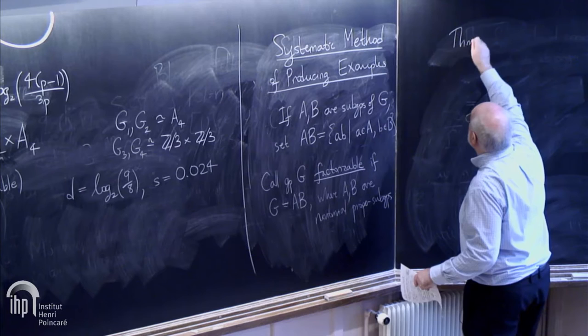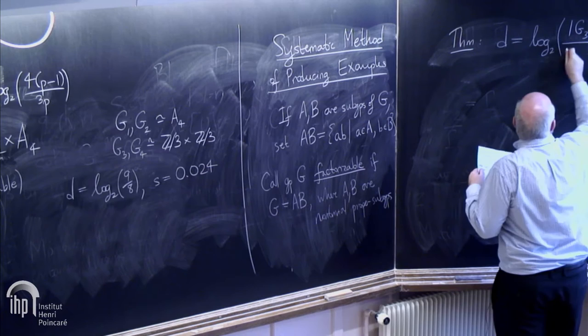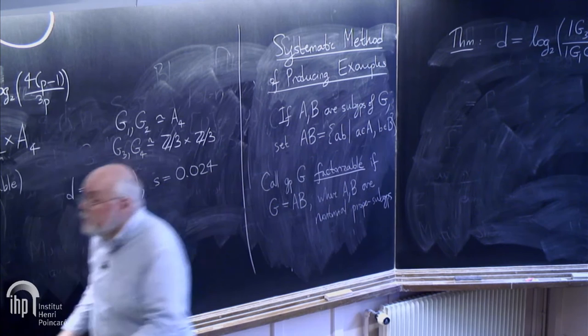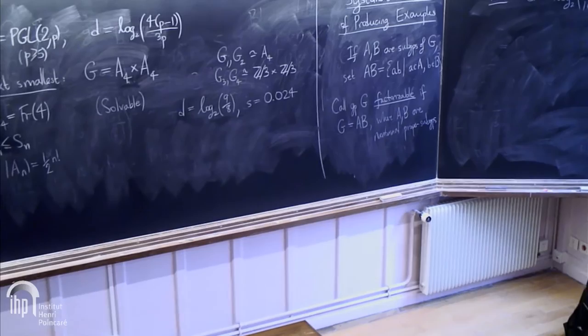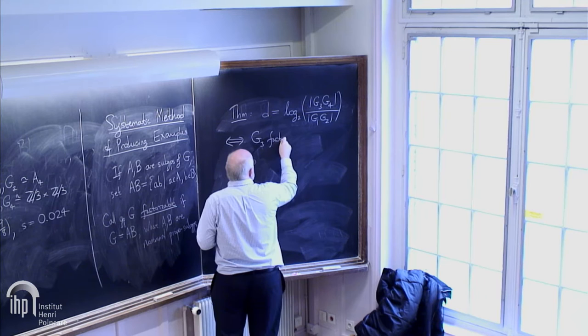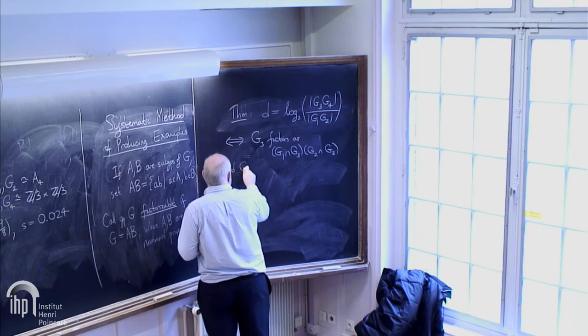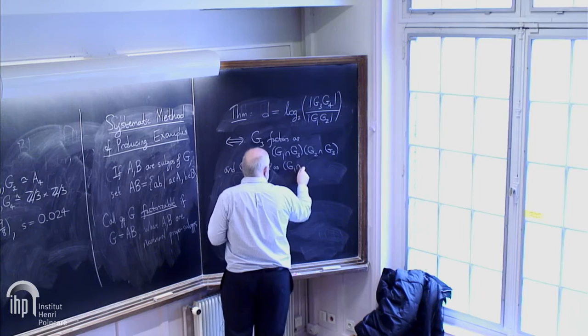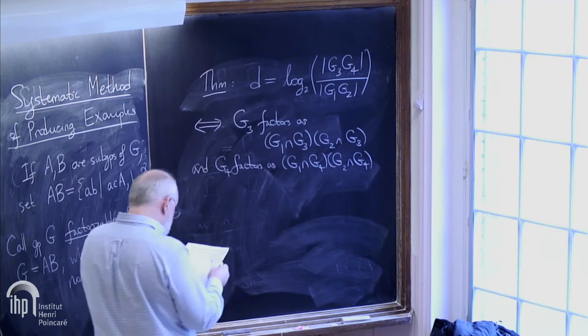The theorem is that D simplifies to a much simpler expression. If you wrote this out in terms of order of G over order of G123, it gets pretty complicated with 10 terms. It actually simplifies: this holds if and only if G3 factors as G1 intersection G3 times G2 intersection G3, and G4 factors as G1 intersection G4 times G2 intersection G4. This theorem will be used to produce systematically good examples.